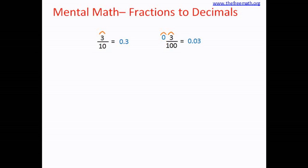But what should we do when the denominator is not like 10, 100 or 1000? In that case we make the denominator something like 10 or 100 or 1000 — we make the denominator easy for the conversion. For example, 2 over 5: you can multiply the denominator by 2 to make it 10. And when you multiply the denominator, you multiply the numerator also. That means we get 4 over 10, which is 0.4.